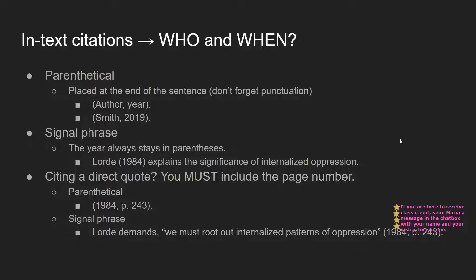Now we'll talk about in-text citations. When we craft our in-text citations, we are concerned with who wrote or created the source and when — we always must know who and when. There are a couple of different ways to cite in-text. The first is the parenthetical citation, which appears in parentheses — it always goes at the end of the sentence, with the period on the outside of the parentheses. The format is: author, comma, year.